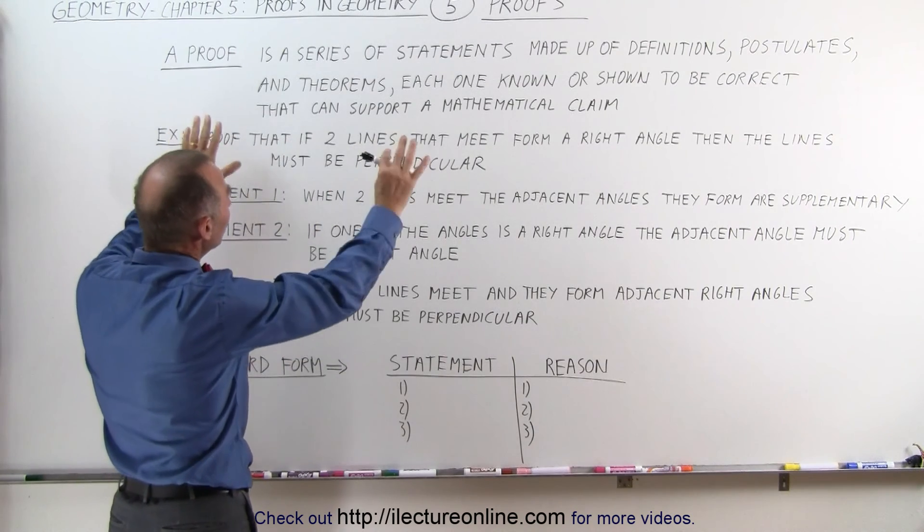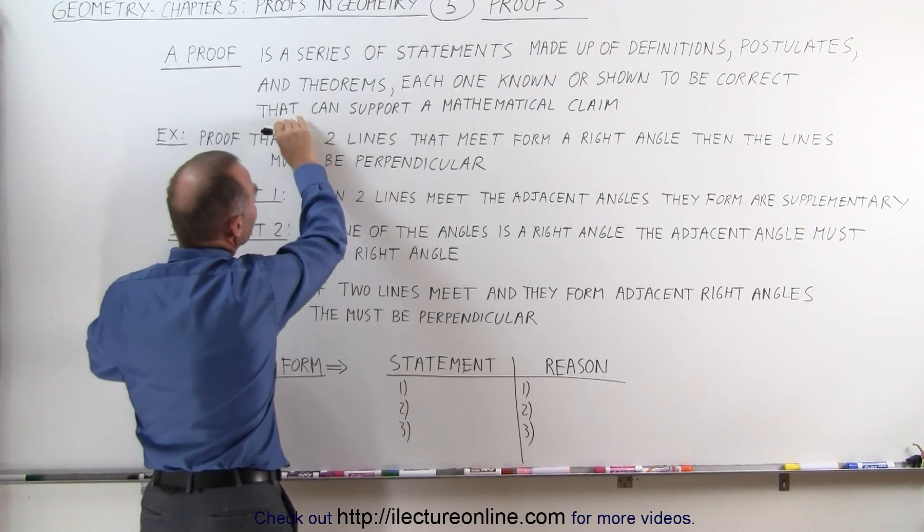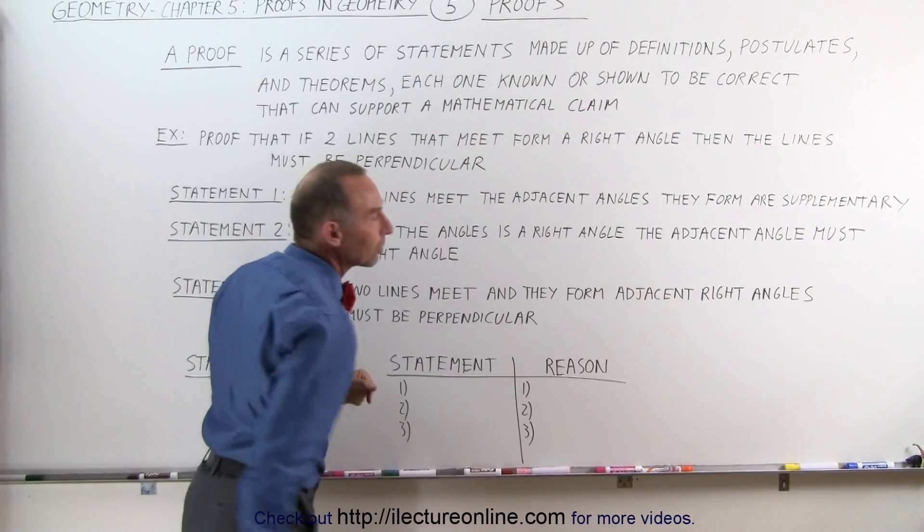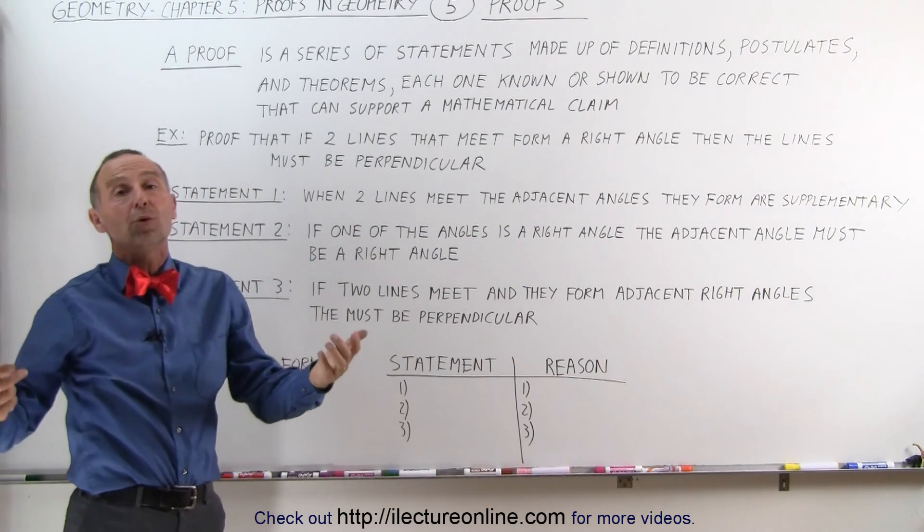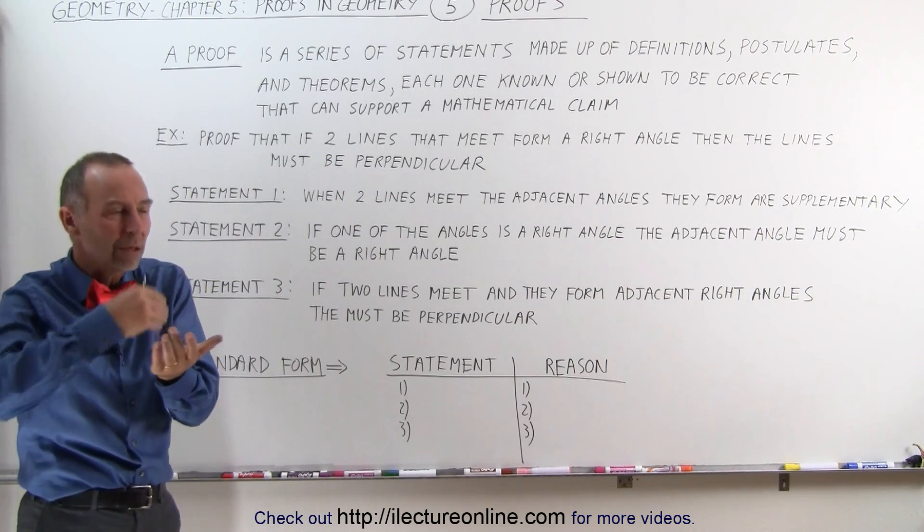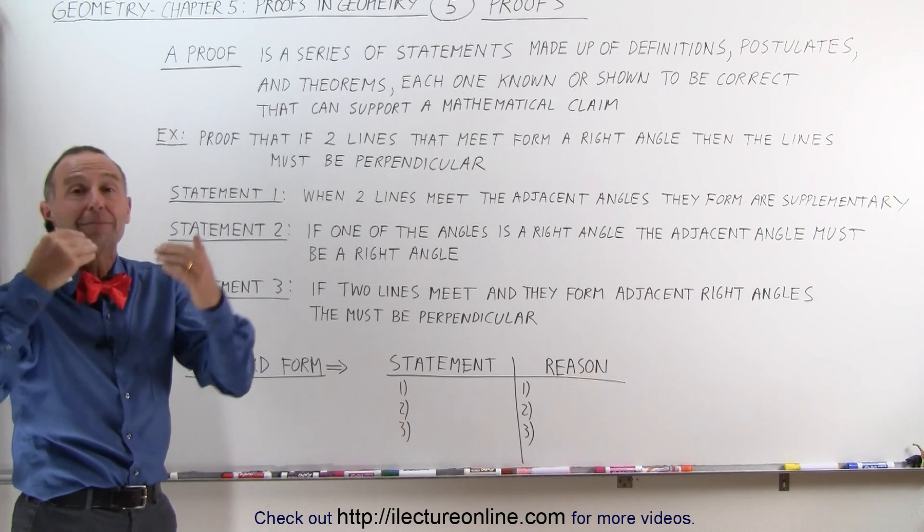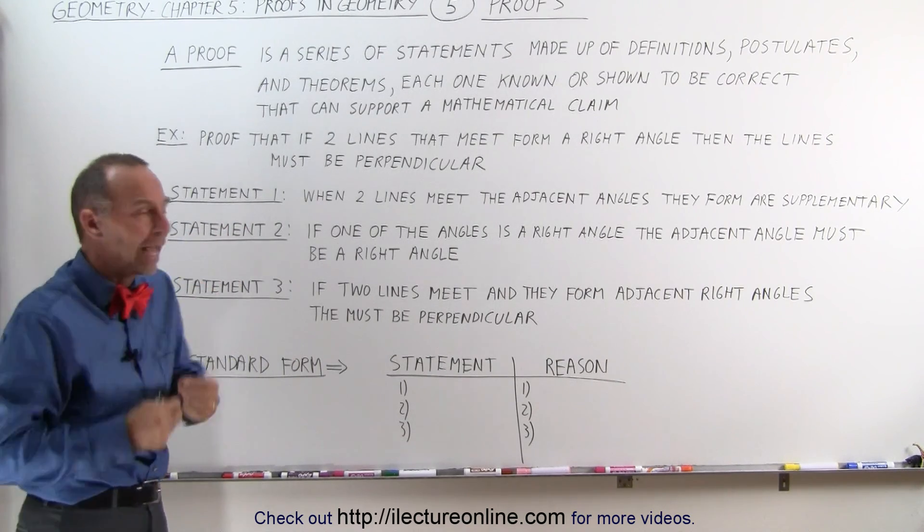When we put those statements together as a string, they can support a mathematical claim. And that's basically what we're doing. When we prove something, we come up with support for that mathematical claim. And once we do that, we've proven that.